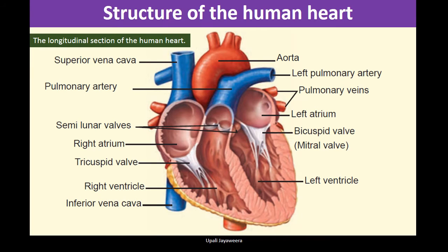Now we will discuss the structure of the human heart. A longitudinal section of the human heart is given here. It is better to draw this diagram and name all the parts. The chambers of the heart are: left atrium, right atrium, left ventricle, and right ventricle. There are also arteries and veins.